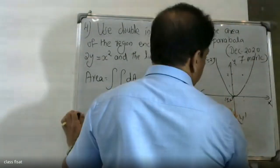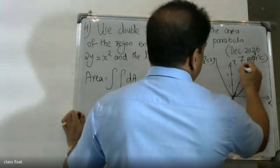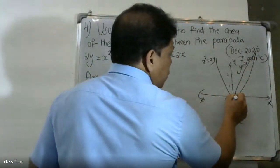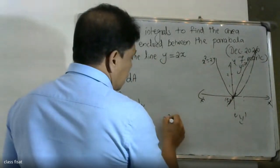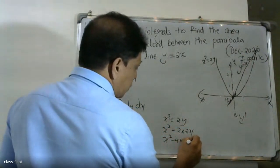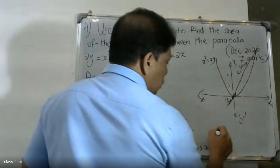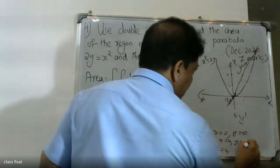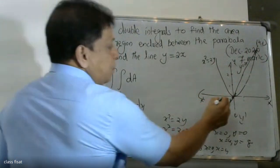There is one corner point. The line is y = 2x. When we write the line, it passes through the point (0, 0). To find intersection: x² = 2y and y = 2x, so x² = 2(2x), giving x² - 4x = 0, so x(x - 4) = 0, meaning x = 0 or x = 4. At x = 4, y = 8. So the points are (0, 0) and (4, 8).